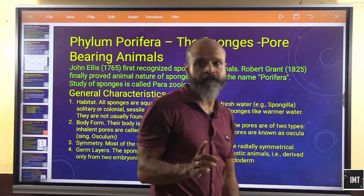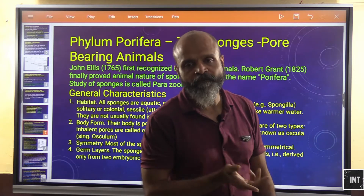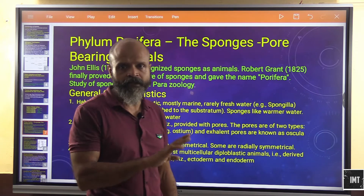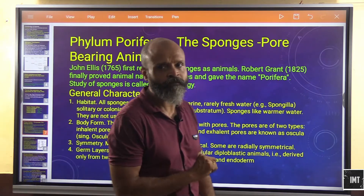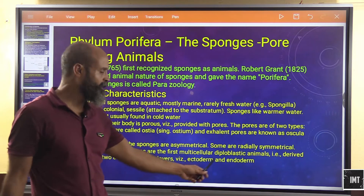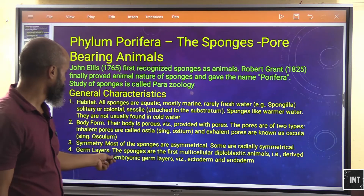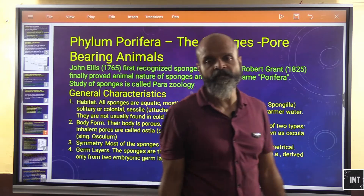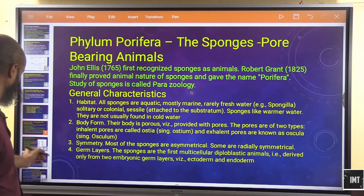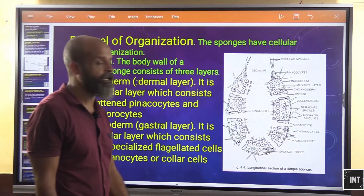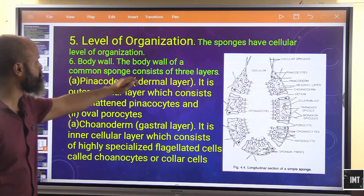Most sponges are asymmetrical, though some are radially symmetrical. Regarding germ layers, sponges have only ectoderm and endoderm — mesoderm is absent. They are therefore diploblastic. Sponges are the first multicellular diploblastic animals, derived from only two embryonic germ layers: ectoderm and endoderm. They have a cellular level of organization.